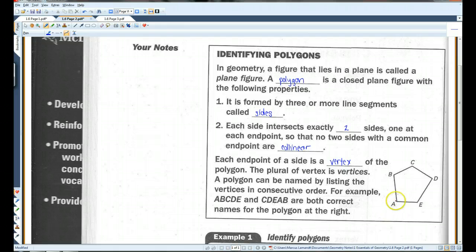So, for example, here we have A, B, C, D, E, or we have C, D, E, A, B. Both are correct.